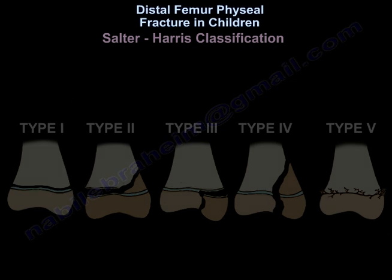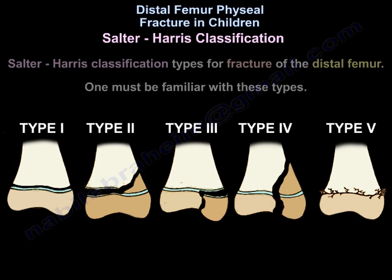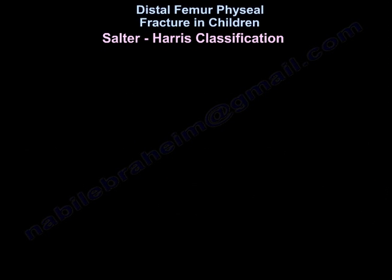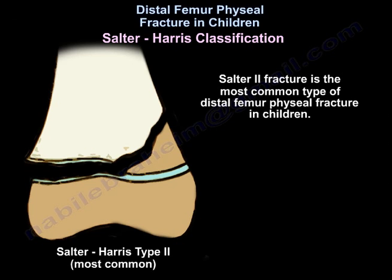This is the Salter-Harris classification of fracture types for the distal femur — one must be familiar with these types. Salter 2 fracture is the most common type of distal femur physeal fracture in children.